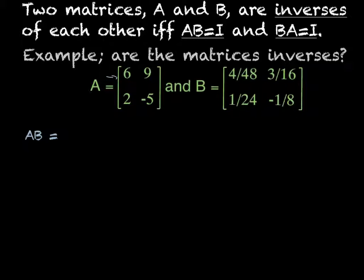So we're going to take the first row times the first column, and that's going to give me 6 times 4 over 48 plus 9 times 1 over 24. And then first row